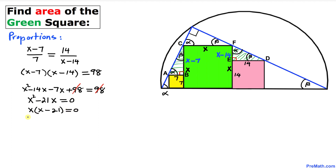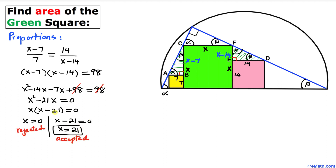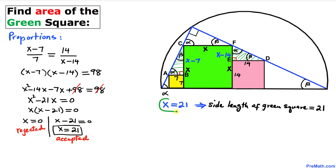Separating the two factors gives us x equals 0 and x minus 21 equals 0, so x equals 21. Since x is the side length of the green square, it cannot equal 0, so we reject x equals 0 and accept x equals 21. The side length of the green square is 21 units.